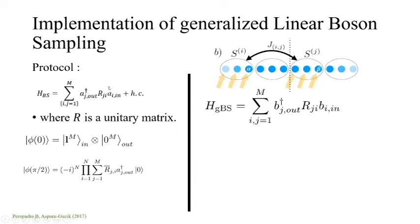In our paper, we show that if you do the same protocol for generalized boson sampling, we just change A to B. Then R is still a unitary matrix. We start from the same initial state. After pi over two, one can prove that the variational distance between the two probabilities goes to zero as M goes to infinity. This means it gives you the same hardness.